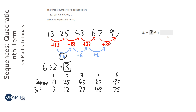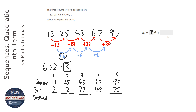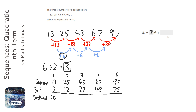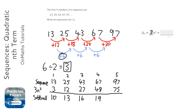What I want to do next is subtract them — I want to do the sequence take away the 3n squared. We know that 3n squared is a part of it; we need to take it away to see what's left. So: 13 take away 3 is 10; 25 take away 12 is 13; 43 take away 27 is 16; 67 take away 48 is 19; and 97 take away 75 is 22.